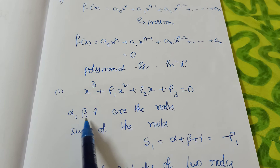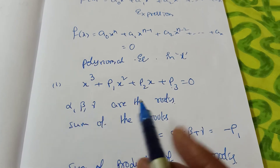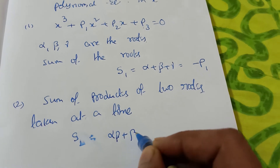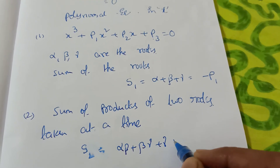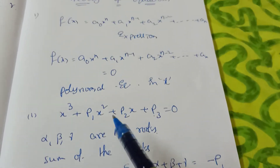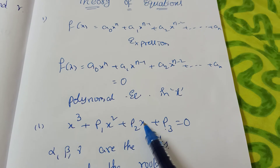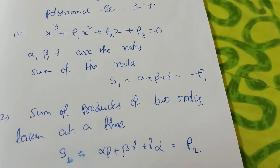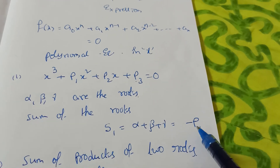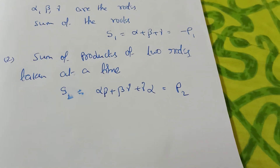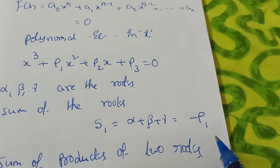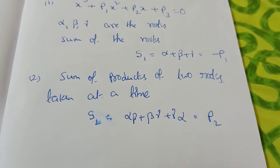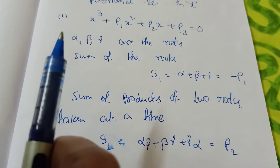S2 = alpha·beta + beta·gamma + gamma·alpha. The formula is +p₂. Notice the pattern: S1 is −p₁, S2 is +p₂, alternating signs minus, plus, minus. Similarly, S3 = −p₃.